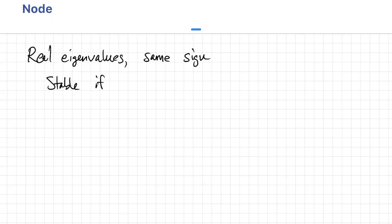In the case of a node, we would have real eigenvalues of the same sign. So if both eigenvalues are negative, it will be stable. If both eigenvalues are positive, then it will be unstable. But either way, it's a node.